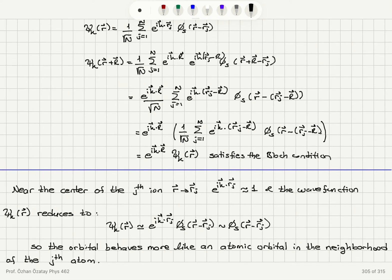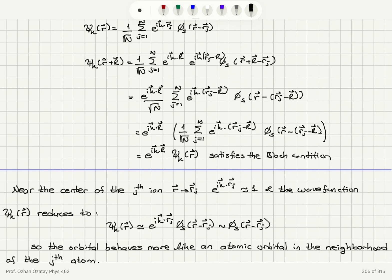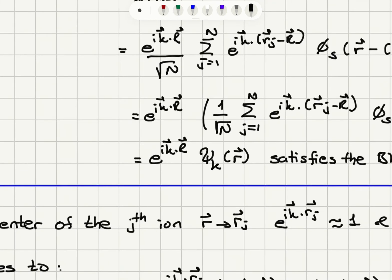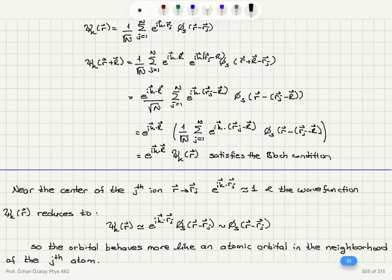So the wave function it just gains a phase here e to the i k dot R when I have a translation by capital R therefore this satisfies the Bloch condition.